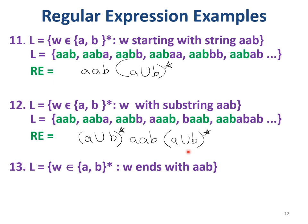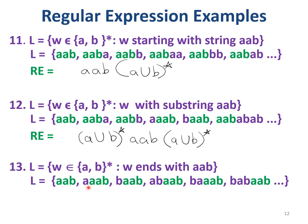For the language where strings end with aab: before aab you can have any combinations of a's and b's. It is similar to the 'starts with' case but must end with. The regular expression is (a union b)*·aab. This is the regular expression for strings ending with aab.